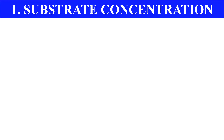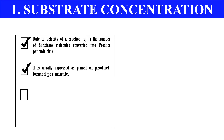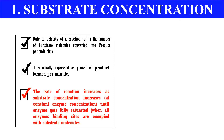First is substrate concentration. The substrate is the molecule which binds to the enzyme and is ultimately converted to product. The reaction velocity, or rate of reaction, is the number of substrate molecules converted into product per unit time. The unit of velocity is micromoles of product formed per minute. The rate of reaction generally increases as substrate concentration increases, but after a certain point the rate becomes constant because all binding sites of the enzyme get occupied by substrate. This is called a saturated enzyme, or the saturation point.